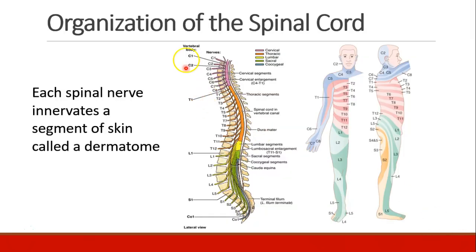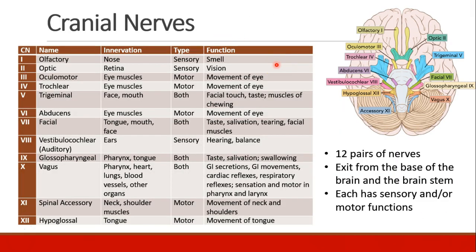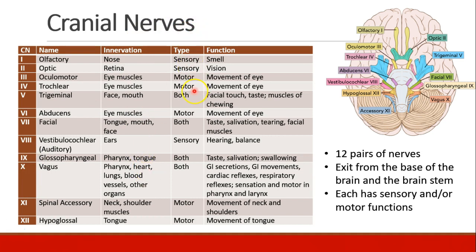Above the cervical spine, when we get to the brainstem, we can start talking about the cranial nerves. There are 12 pairs of cranial nerves that exit from the base of the brain and the brainstem. You do not have to memorize all of these nerves, but it would be a good idea to be familiar with them. All the information is in a table for your reference, showing the name and number of each nerve, what it innervates, whether it's sensory, motor, or both, and its primary functions.